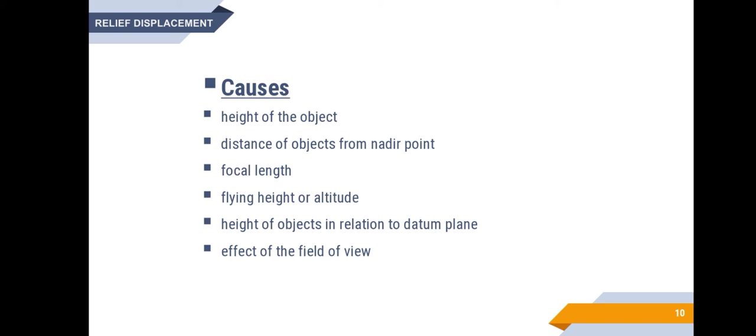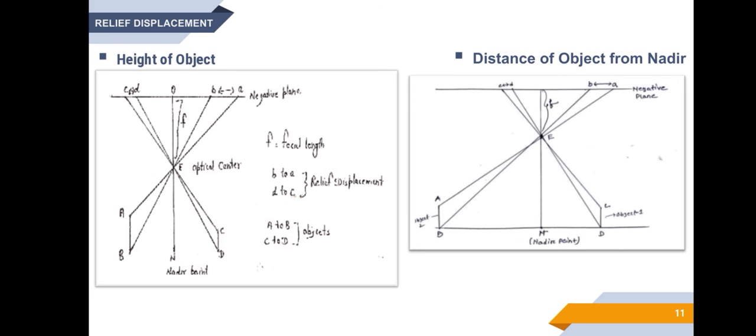Let's discuss each one of them. First, height of the object. In this case, AB and CD are different objects of different height placed at equal distance from the nadir point. When these objects are projected onto the photographic plane, the magnitude of the relief displacement of AB is more when compared to that of CD. That is, when the distance of objects from the nadir point remains the same but the object height increases, the higher object is displaced more.